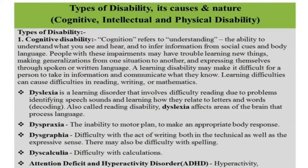The first type is cognitive disability. Cognition refers to the ability to understand what you see and hear, and to infer information from social cues and body language. People with this impairment may have trouble learning new things, generalizing from one situation to another, and expressing themselves through spoken or written language. Learning difficulties can cause challenges in reading, writing, or mathematics. Individuals with this type of disability may show symptoms like memory disorder, hyperactivity, and dyslexia.